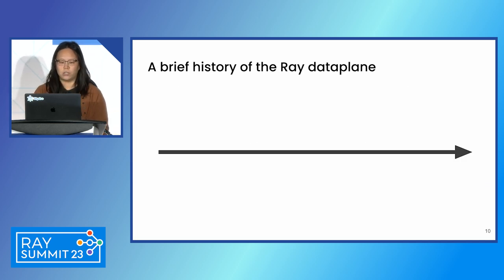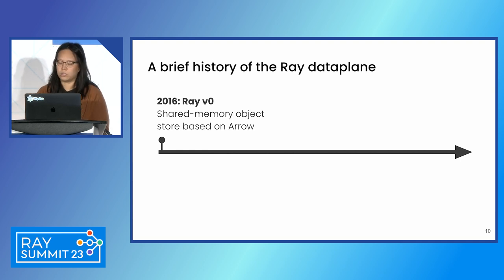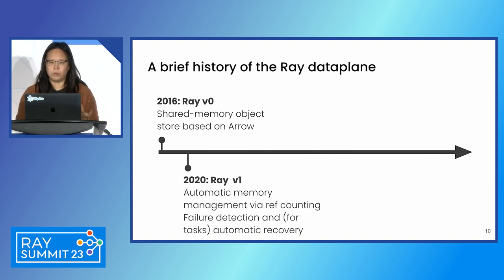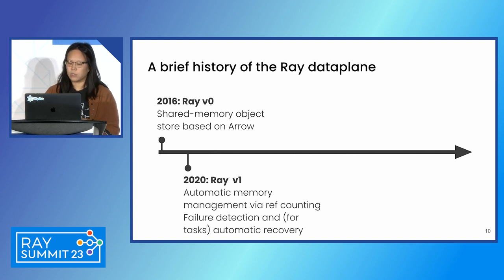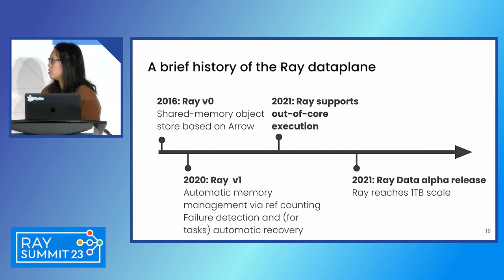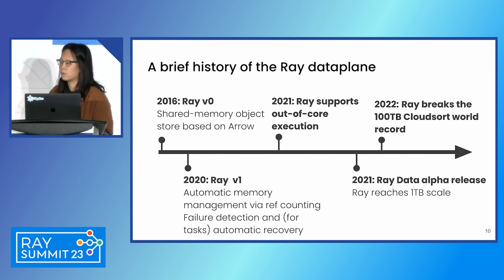The Ray data plane has actually gone through quite a few changes. We always had shared memory — from the very beginning, we natively supported Arrow and had this shared memory object store. In the first major version of Ray, released in 2020, we introduced a couple of major design features important for stability: automatic memory management through reference counting and reliable failure detection and recovery. Building on that more stable core, we were able to support more advanced features like spilling from memory to disk, which in turn allowed us to build out more advanced data plane libraries such as Ray Data. This also culminated in the CloudSort world record.